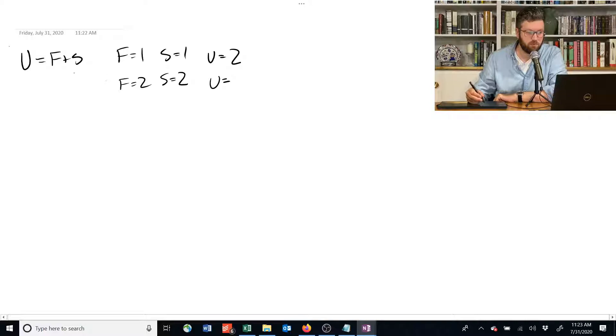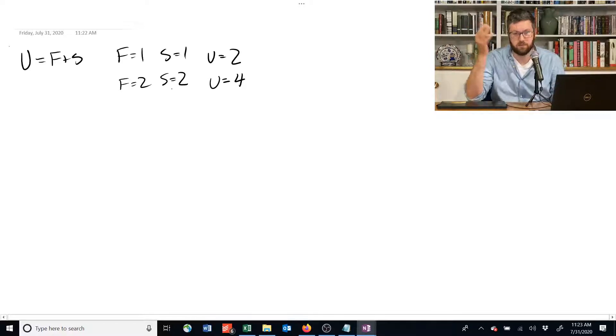If you have 2 and 2, we get utility is equal to 4. 4 is greater than 2, so people would prefer to have 2 of each to 1 of each. That's consistent with the non-satiation principle that more is better.